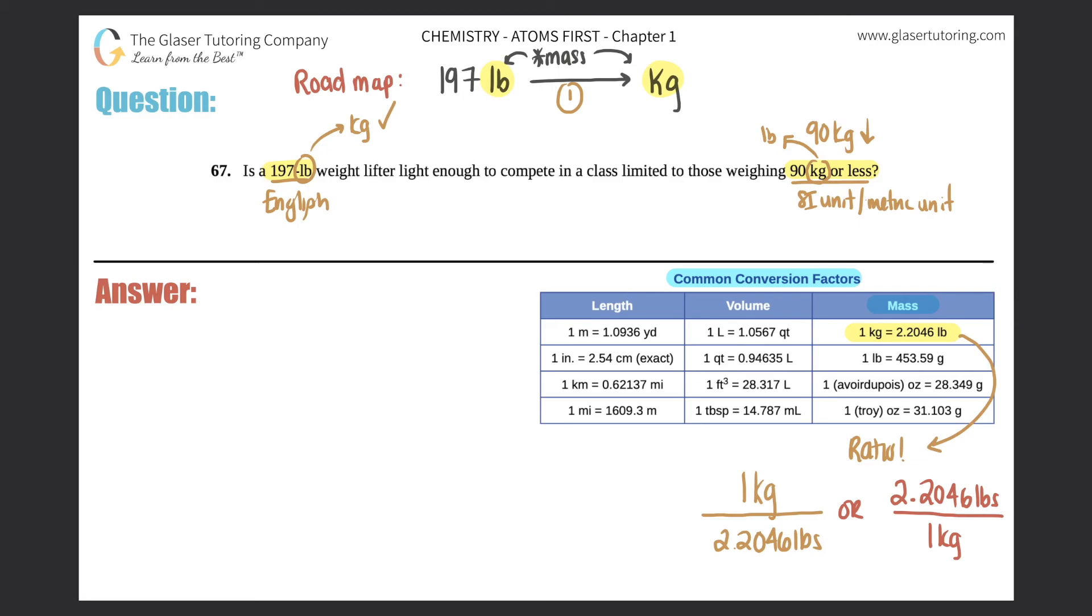So now when we convert, we always start with what we're given. So what we're given is what we want to convert. We want to convert this 197 pounds. So that's my given. So I will put that starting here, 197 pounds. Now, remember, whenever we convert, we always multiply by a ratio. So I times by that fraction line.